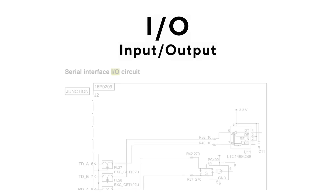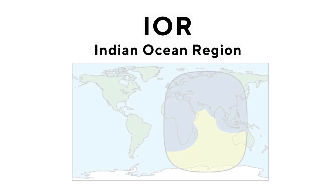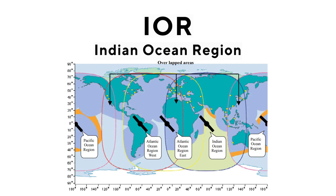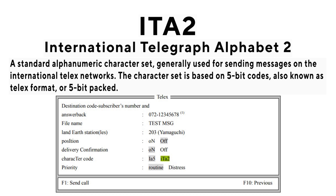I/O: Input/Output. IOR: Indian Ocean Region. ITA2: International Telegraph Alphabet 2 — a standard alphanumeric character set generally used for sending telex messages. The character set is based on 5-bit codes, also known as Telex Format or 5-bit PAC.